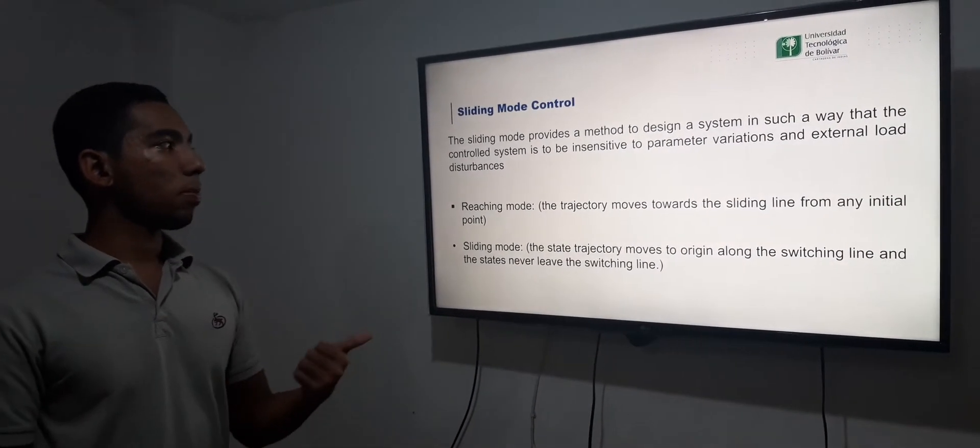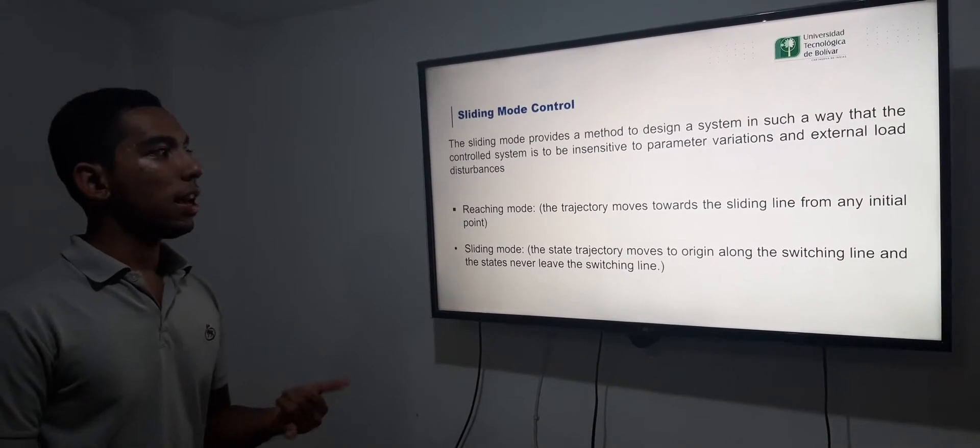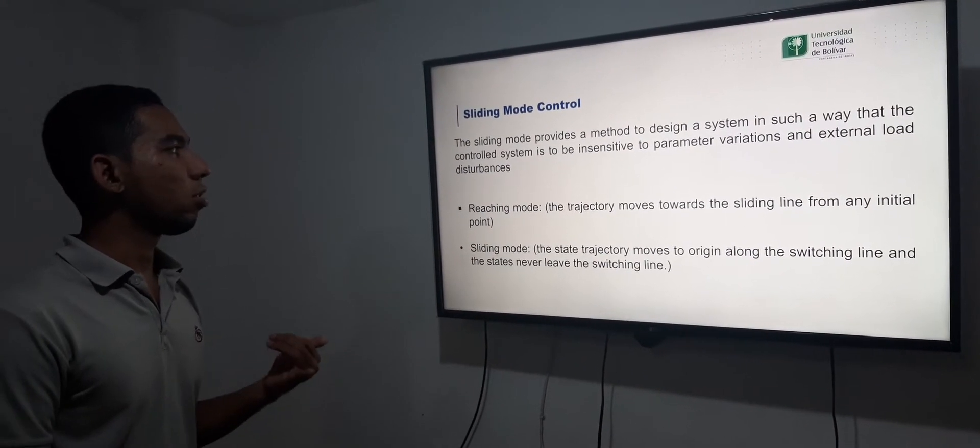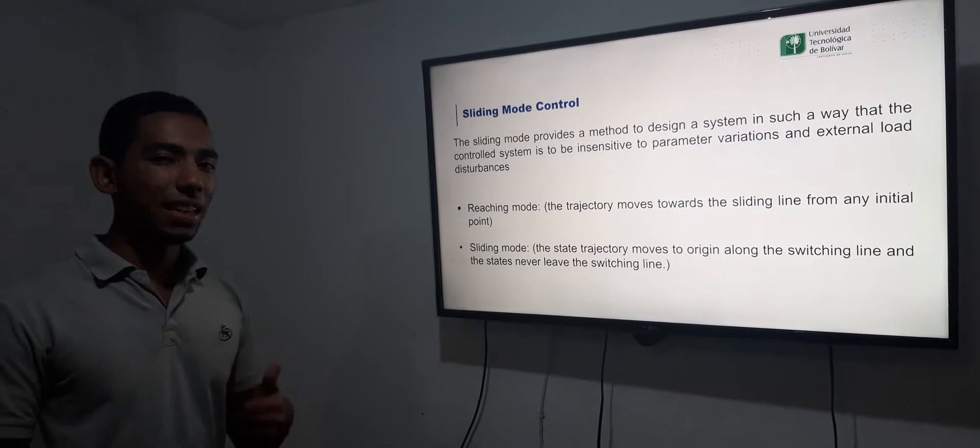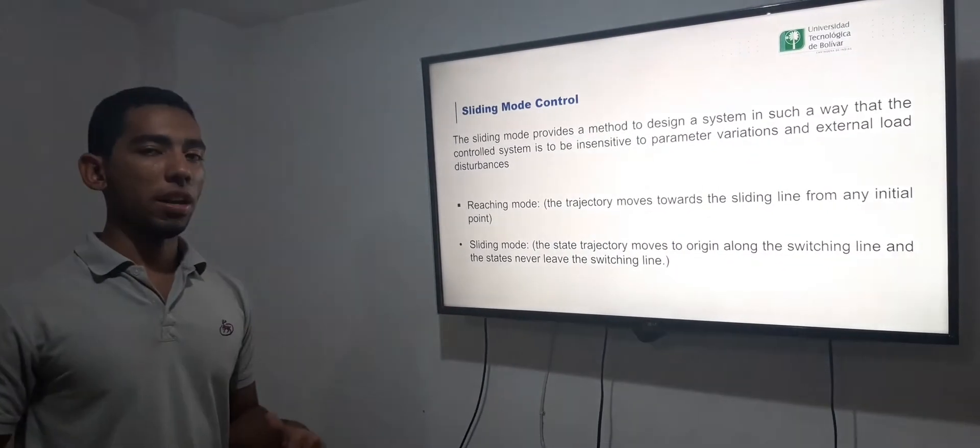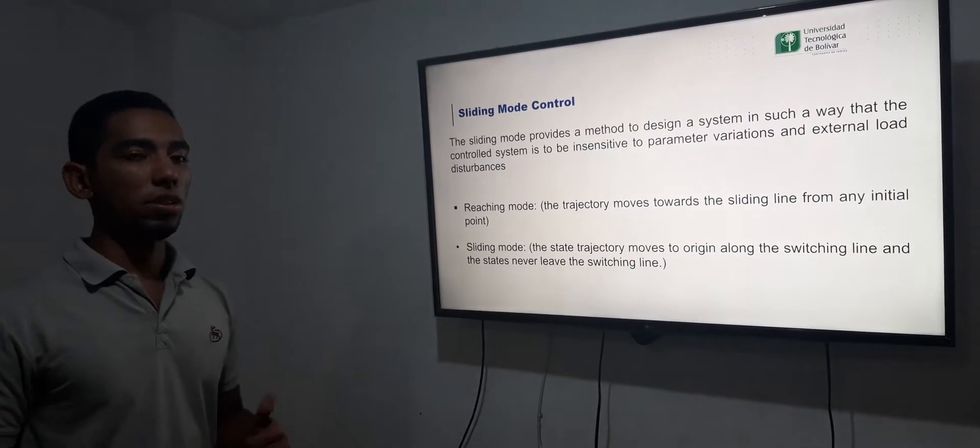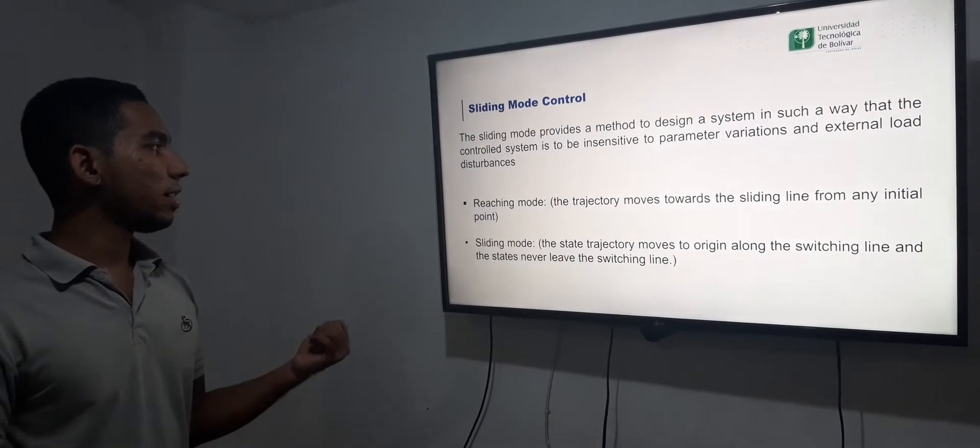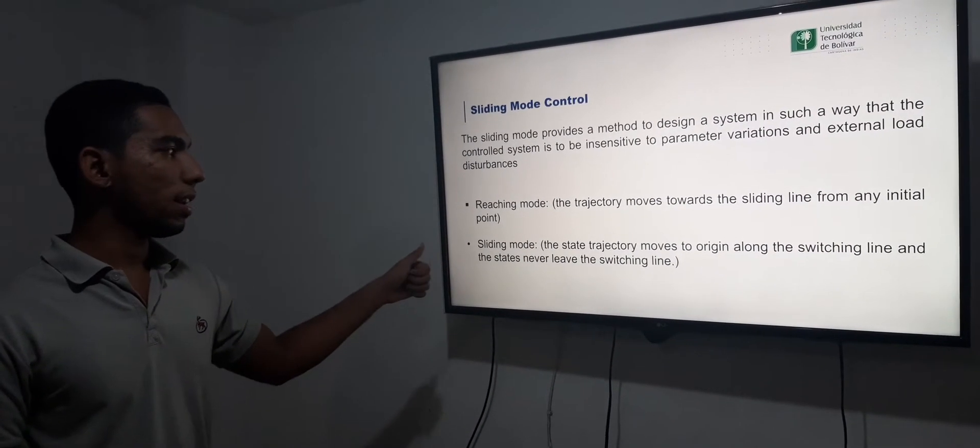The sliding mode provides a method to design a system in such a way that the control system is insensitive to parameter variations and external load disturbances. It has two modes: the reaching mode and the sliding mode.